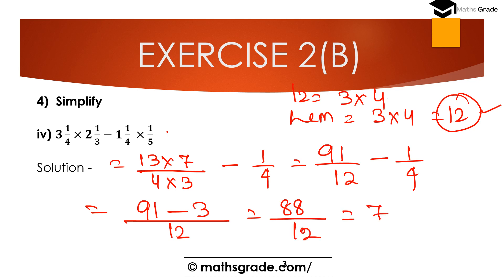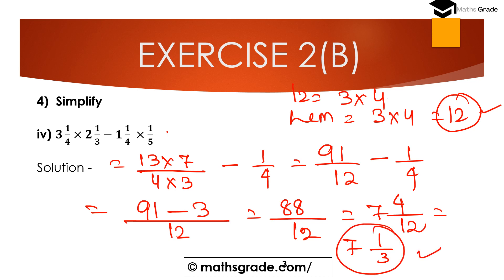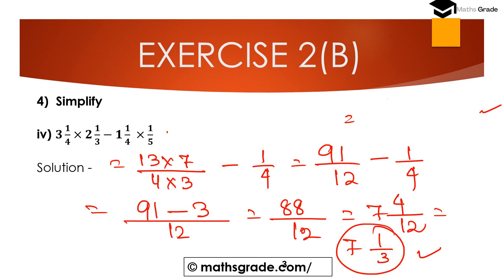Now simplify 88/12: cancel common factors — 4 and 12 cancel, giving 22/3, which is 7 and 1/3. The answer is 7 and 1/3.